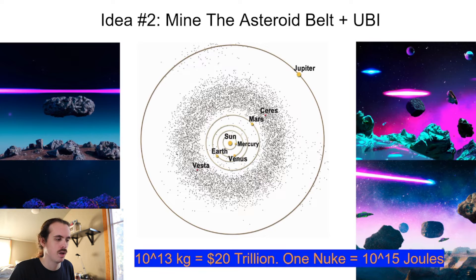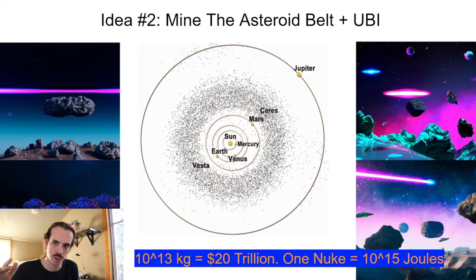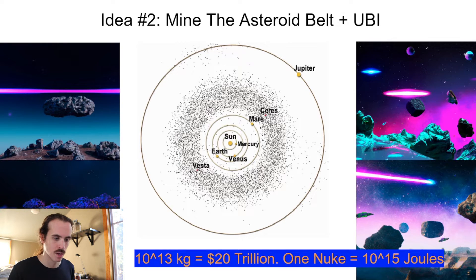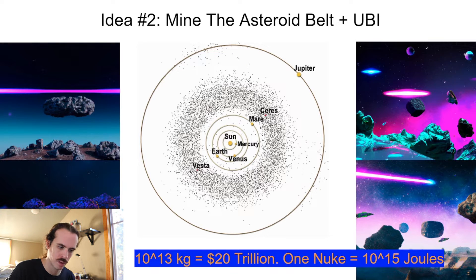From a numbers perspective, take asteroid 355 Gabriella - it weighs 10^13 kilograms and has 20 trillion dollars worth of metal; it's an M-type asteroid near Venus. One nuke is about 10^15 joules, and it takes about 10 joules to move one kilogram of mass one meter. We can deduce it would take at most a handful of nukes' worth of energy to redirect this 20-trillion-dollar asteroid onto the Moon. So we could spend a couple billion dollars and get 20 trillion dollars of asteroid onto the Moon.